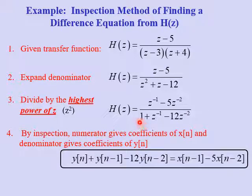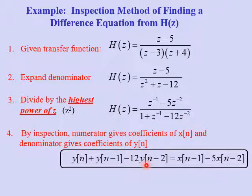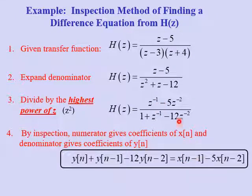Now we can write the difference equation by inspection. The denominator gives: 1 gives y of n; z to the minus 1 gives y of n minus 1; minus 12z to the minus 2 gives minus 12y of n minus 2. The numerator gives the right-side x terms: z to the minus 1 gives x of n minus 1; and minus 5z to the minus 2 gives minus 5x of n minus 2. That is the linear difference equation describing the system with this transfer function.